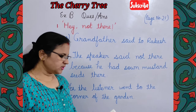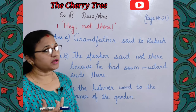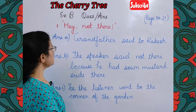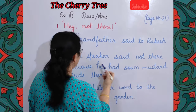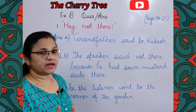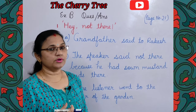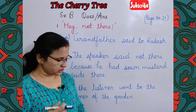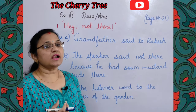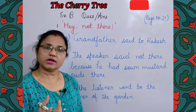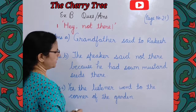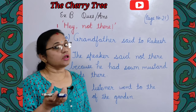Question B: Why did the speaker say 'not there'? The speaker said 'not there' because he had sown mustard seeds there. Question C: Did the listener go somewhere else? If so, where? Yes, the listener went to the corner of the garden.